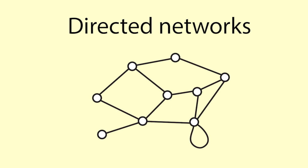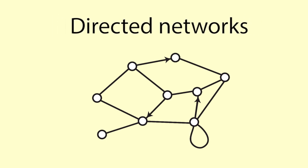Directed networks. Sometimes arcs are given directions and are called directed arcs. For example, to represent one-way streets or the passage of time. Networks containing directed arcs are called directed networks.